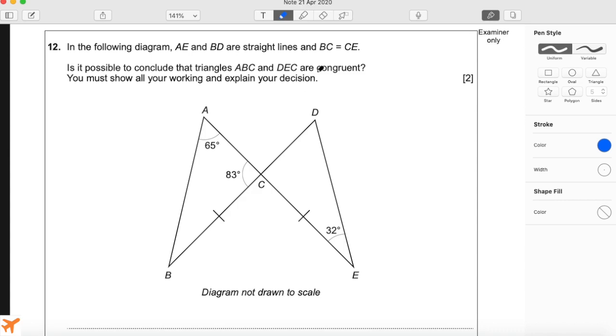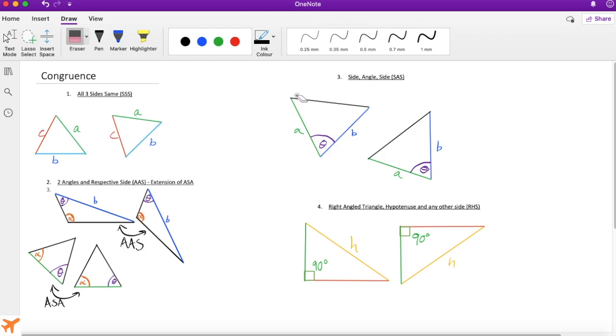More specifically with triangles, we have some rules here. If we have one of these rules that are true, then we can say that the two triangles are the exact same regardless of their orientation. Orientation just means which way up they are.